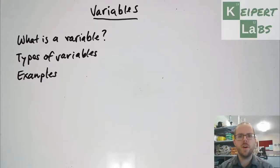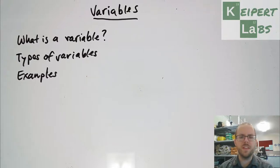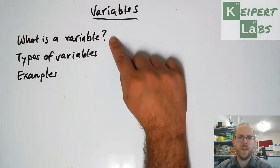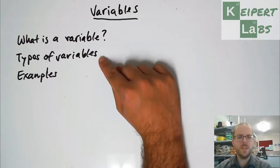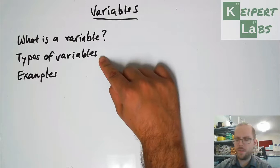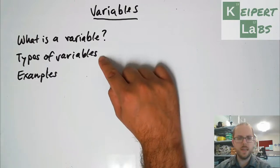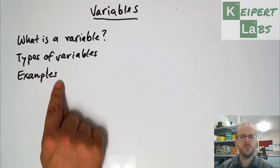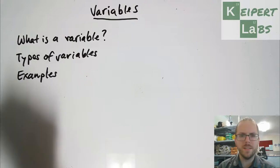Hi everyone, welcome to this episode of Kuypert Labs. In this video we're going to be talking about variables in the scientific method. We're going to talk through what is a variable, thinking about how scientists would define that word, the types of variables we come across in science experiments and how we can actually measure those. Then we're going to spend a little bit of time going through some examples. Alright, let's begin.